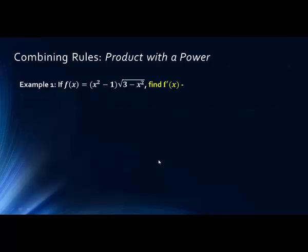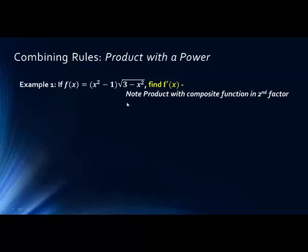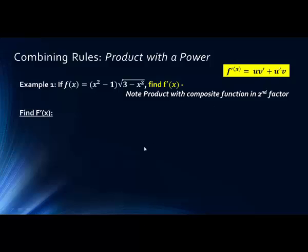Let's look at another one. Here we have a product with a power. f(x) is now a product of two functions: a function in parentheses and a function under a radical. We typically turn radicals into exponentials when solving derivatives so we can use the Power Rule — in this case, the Power Rule and Chain Rule. The first factor has power 1, so it's not a composite function; we don't need the Chain Rule on it. Using the Product Rule: derivative of the second factor times the first, plus the derivative of the first times the second.